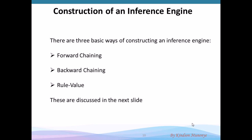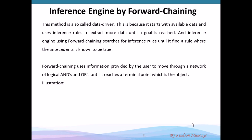The next topic is the construction of an inference engine. There are three basic ways to construct an inference engine: the first is forward chaining, the second is backward chaining, and then we have the rule value, or rule-based inference engine. The forward chaining inference engine starts with the attributes or the data and uses inference rules to get more data and reach a conclusion.